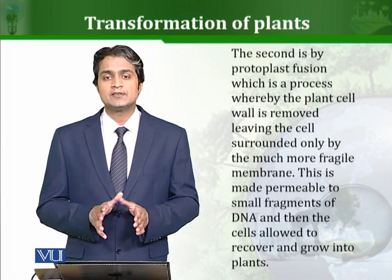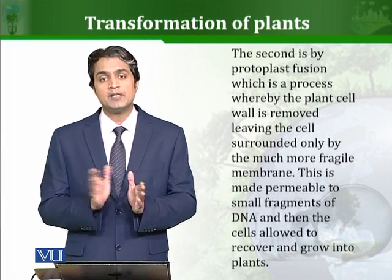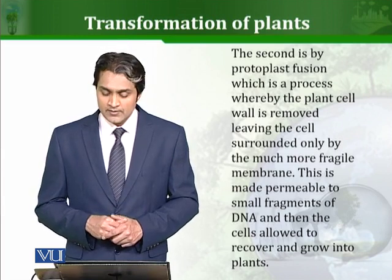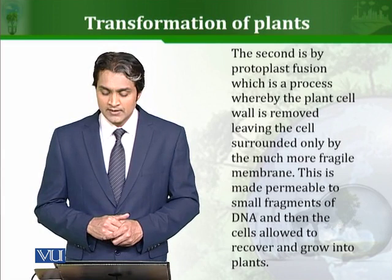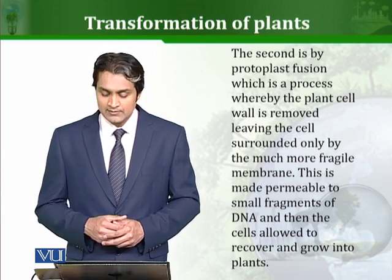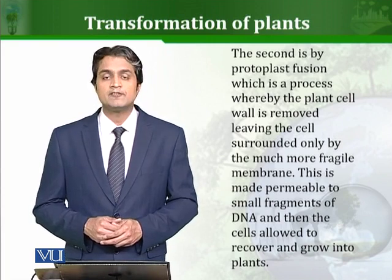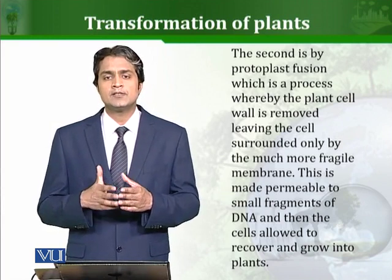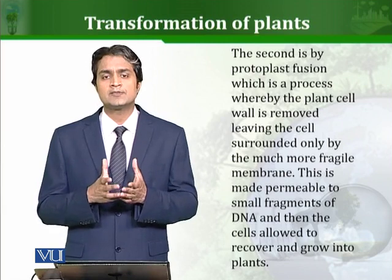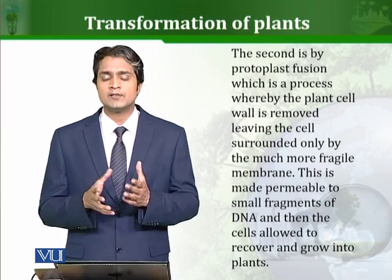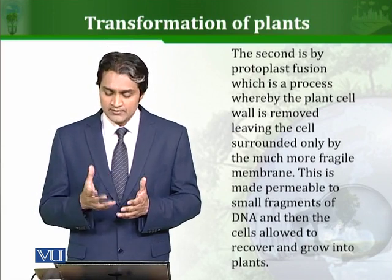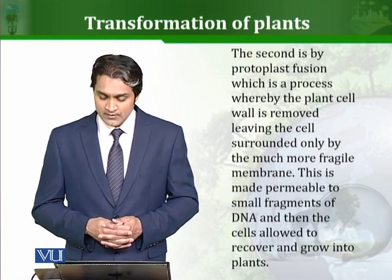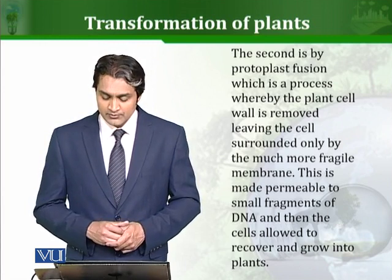The second widely used method, apart from the Ti-plasmid method, is to make protoplasts. Protoplasts are plant cells from which the cell wall has been removed, leaving the cells surrounded by the much more fragile membrane. The cell wall is almost completely removed, and without the cell wall the plant cell structure becomes very fragile and very tender.